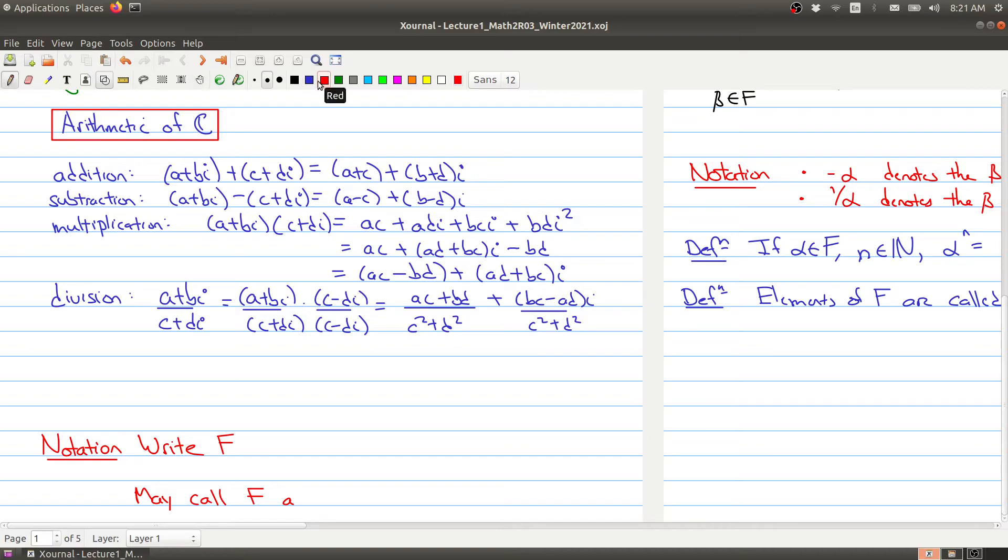And in this course we're going to write F if a property holds for both R and C. So what happens in linear algebra is there are some results that will depend upon whether our numbers are coming from R or coming from C, but there are actually many results where it doesn't actually matter whether we're taking our numbers from the real numbers or the complex numbers. And in that case we just normally write F, and you may hear me call F a field. I'll talk a little bit about a field at the end of today's lecture.